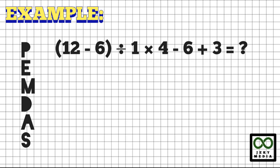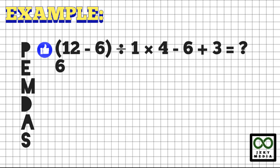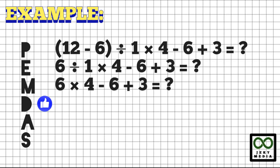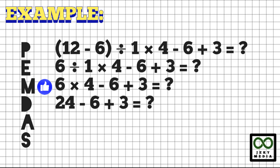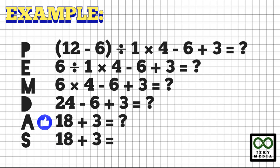Here is another one: a quantity inside a parenthesis, 12 minus 6, divided by 1, multiplied by 4, minus 6, plus 3. Let's work inside the parenthesis: 12 minus 6 is 6. Now we have division, multiplication, subtraction, and addition — let's start from the left. Division: 6 divided by 1 is 6. Next, multiplication: 6 times 4 is 24. Subtraction: 24 minus 6 is 18. Copy plus 3. Addition is the only operation left: 18 plus 3 is 21.